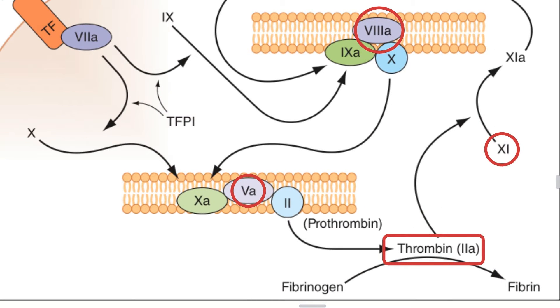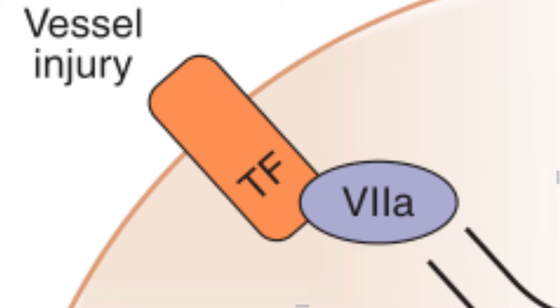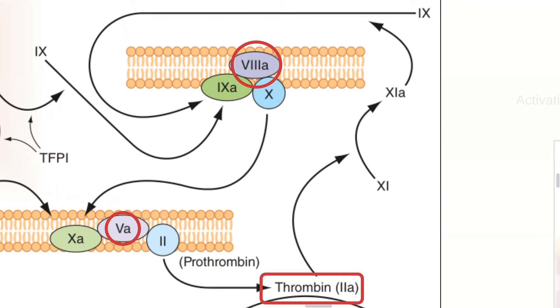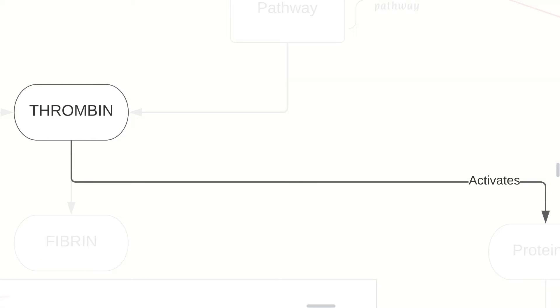If our tissue factor and factor 7 are inactivated by the tissue factor pathway inhibitor, also known as TFPI, then this makes our coagulation dependent on the amplification loop through factor 9 and 8.